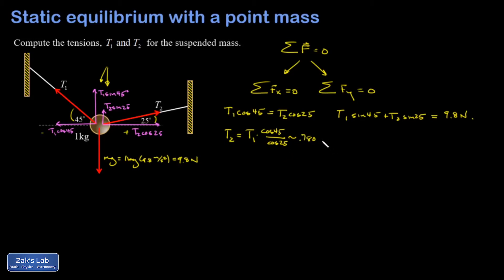So T2 is 0.780 T1, and then I'm going to sub that into the second equation. So I have T1 sine 45 plus T2 sine 25, but T2 is 0.780 T1, equals 9.8.